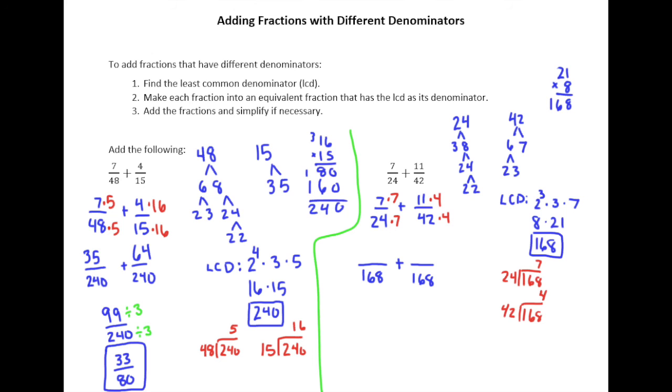So, 7 times 7 is 49. 11 times 4 is 44. Add those together. And, we end up with 93. So, we have 93/168.